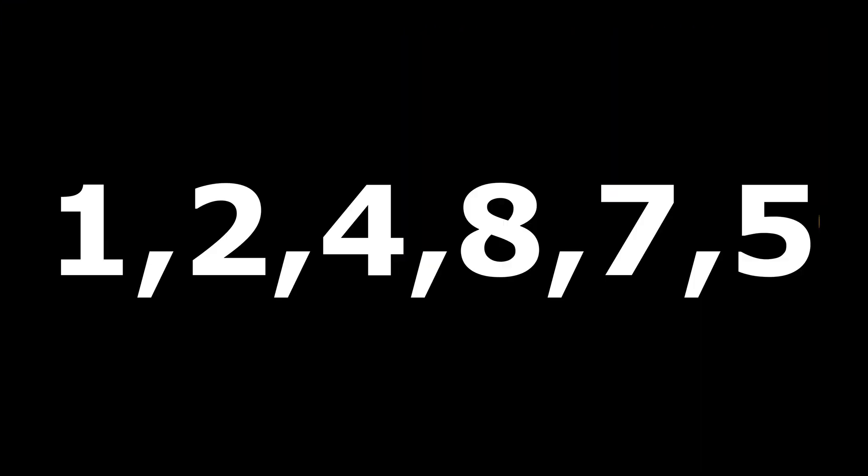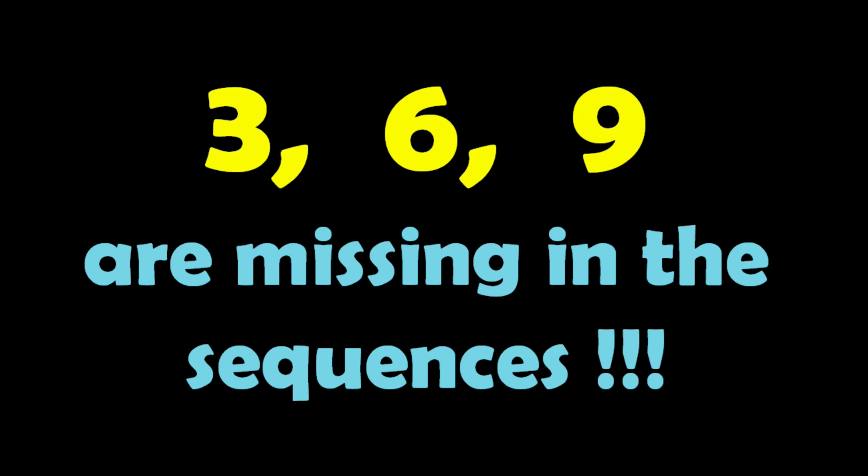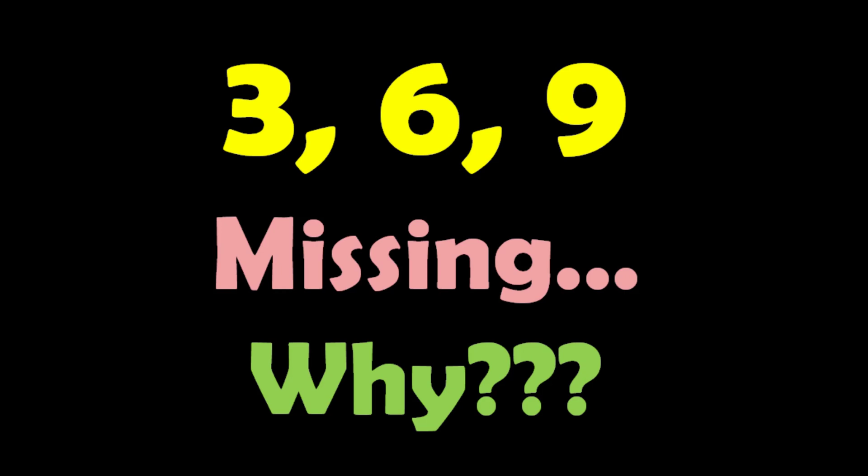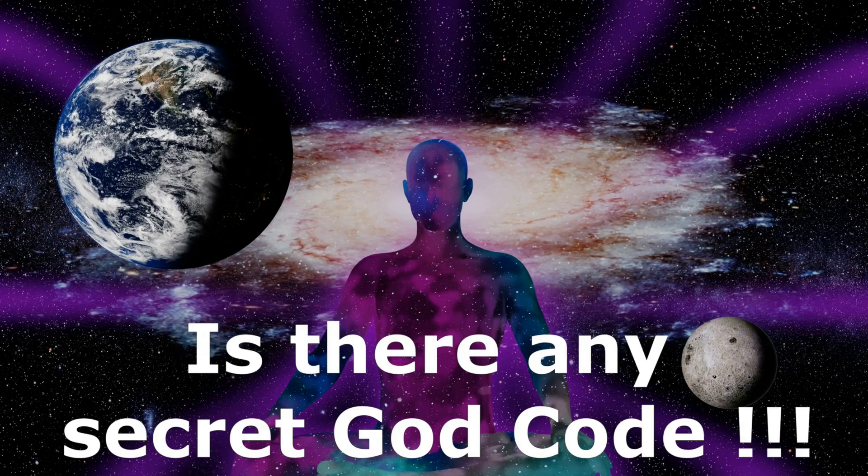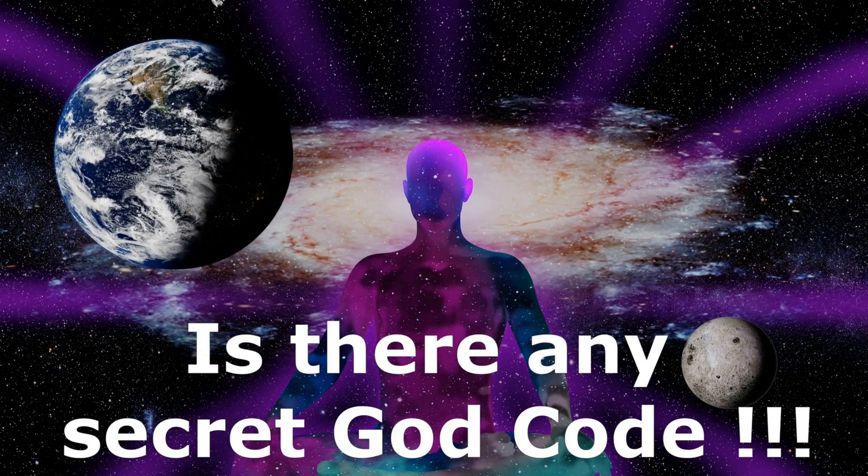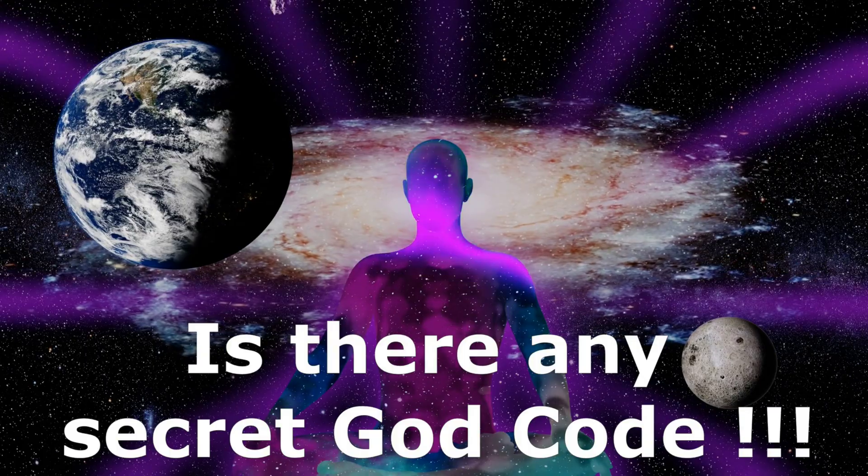These repeating numbers 1, 2, 4, 8, 7 and 5 are represented in white in the diagram, while the missing numbers 3, 6 and 9 are shown in yellow. But what does the absence of numbers 3, 6 and 9 in the sequence mean? Does it point to any secret code of the god or some mystery of the universe?